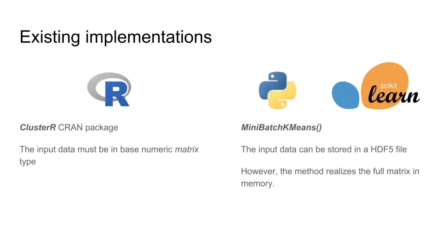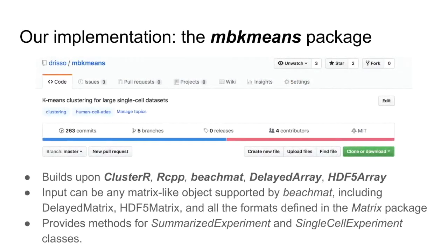There are a couple of existing implementations of this method: in the ClusterR CRAN package and in the MiniBatchKMeans function in scikit-learn in Python, but both of them don't really work on HDF5 files as one would think — they all store the whole matrix in memory at some point. So we implemented our own package, called mbk-means, which builds upon ClusterR and takes inspiration from it, but also from beachmat, DelayedArray, and HDF5Array.